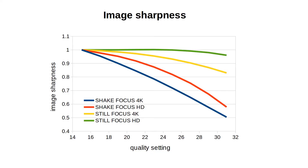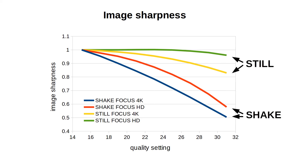Let's get to the results. Starting with image sharpness — you'll always see the same color coding in all of my graphs. Blue is 4K with shaking, red is HD with shaking, orange is 4K still, and green is HD still. The x-axis is always image quality decreasing from left to right, and in this case the y-axis is image sharpness. I divided all sharpness values by the first value of its corresponding series, making the first value equal to 1 so we can better compare the trends. Still videos always had better sharpness than those with moving objects, as expected.